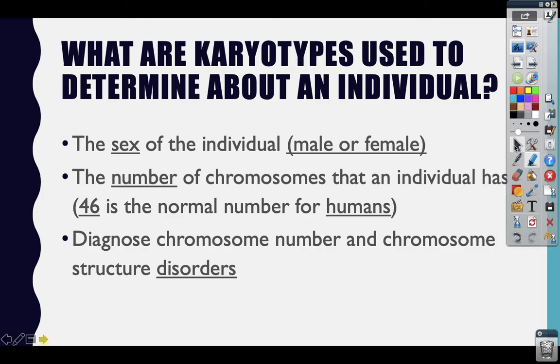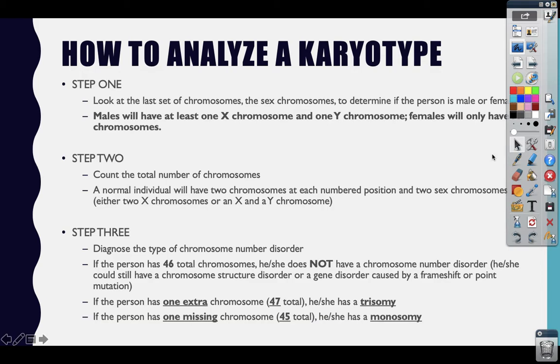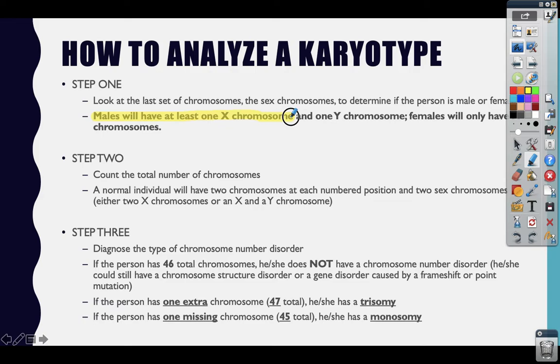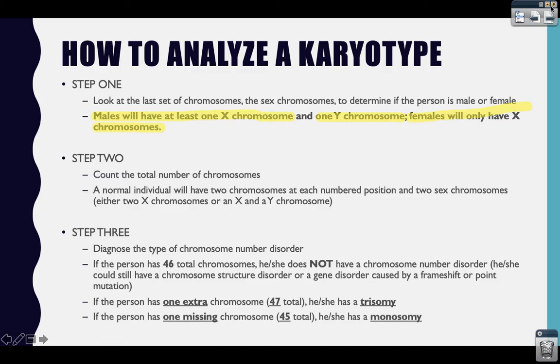Now let's take a look at how to analyze a karyotype. The first step is to look at the very last set of chromosomes — the sex chromosomes — and figure out if the person is male or female. It's important to remember that males will have one X chromosome and one Y chromosome if they're normal. They could have an extra sex chromosome, but that would cause a disorder. Females will only have X chromosomes. A normal female will have two X chromosomes, while a female with Turner Syndrome will only have one X chromosome.